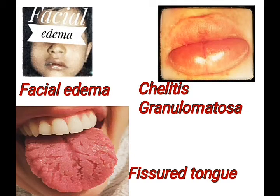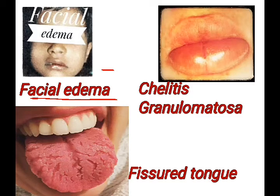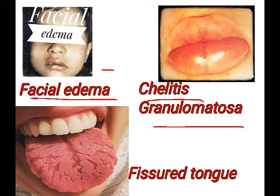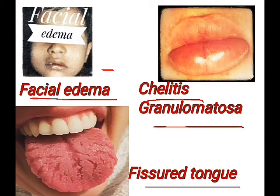As you can see here, this is facial edema. Cheilitis granulomatosa means there will be swelling on the lips — you can observe clearly in this picture, swelling is present in both upper and lower lip. Fissured tongue shows a central groove area; you can observe the depth is up to 6 mm in this picture.